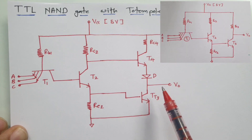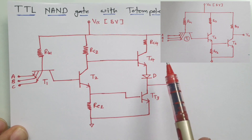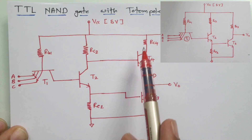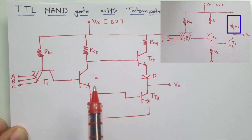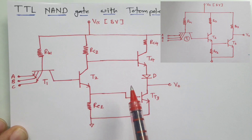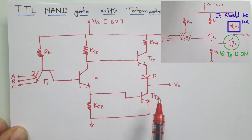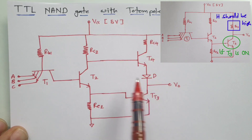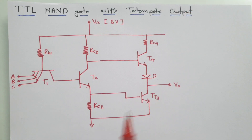The basic difference between the standard TTL circuit and this circuit is that previously we only had a passive pull-up resistance, which has now been replaced by a transistor-diode connection. As mentioned earlier, we need lower resistance when T3 is off and higher resistance when T3 is on. Let us understand this through the working of the circuit.